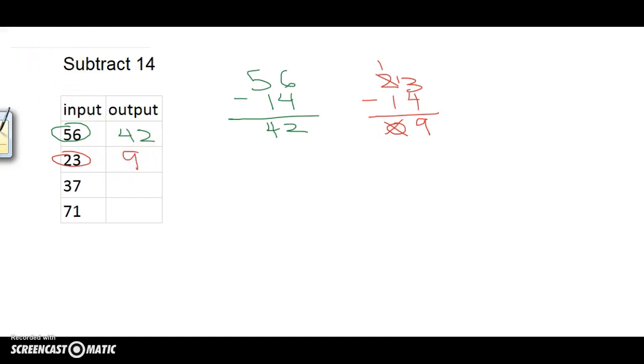Let's try the next one. Switch to blue. 37. Let's do that down here. 37 minus 14. Again, start with the ones digit. 7 minus 4 is 3. 3 minus 1 is 2. Therefore, when my input is 37, my output is 23.